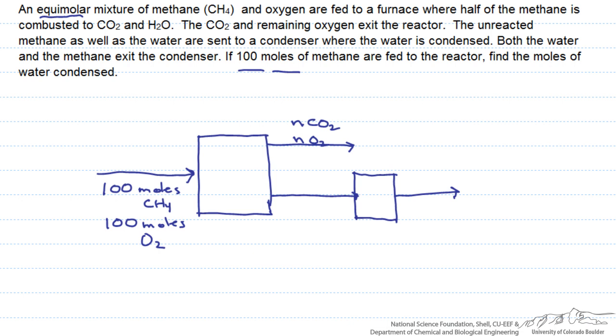The unreacted methane, so we know that it's half, so that's 50 moles of methane, as well as the water, are sent to a condenser where the water is condensed. Both the water and the methane, and notice nothing happens to the number of moles, it's just that the water is condensed, exit the condenser.